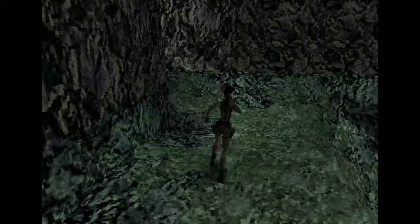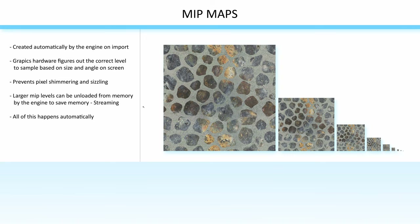But more modern hardware is able to fix this by simply sampling from smaller versions of the texture — the lower mips — when objects are further away. Another important thing to know about mipmaps is that the game engine can dynamically load and unload them from graphics memory, depending on when they're needed.